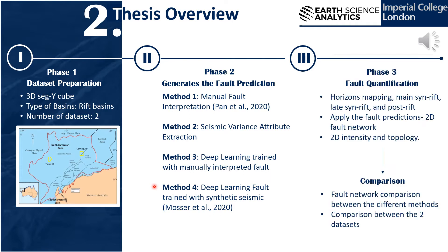For fault quantification, the seismic cube is sliced onto three horizons — main synrift, late synrift, and post-rift — to show fault evolution through time. All methods of fault prediction are applied to these horizons, generating 2D fault networks. Each is then quantified using 2D intensity and topology. Finally, fault predictions of different methods are compared, and the two areas are compared.